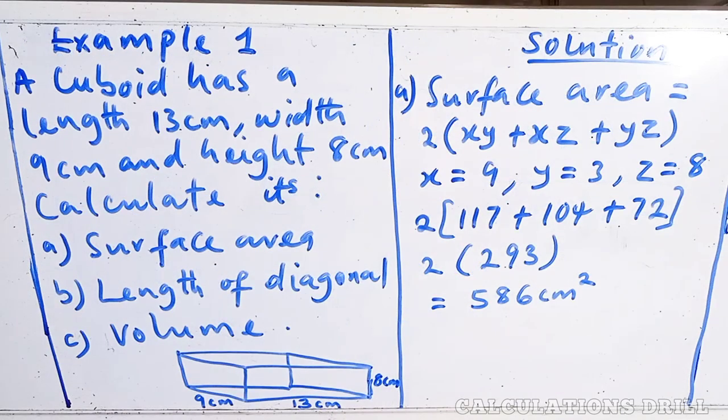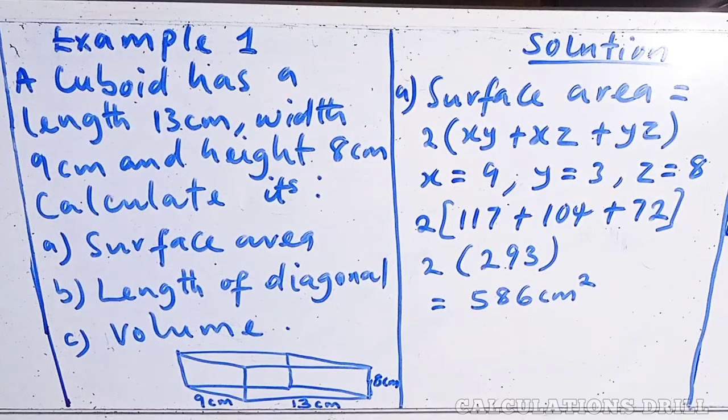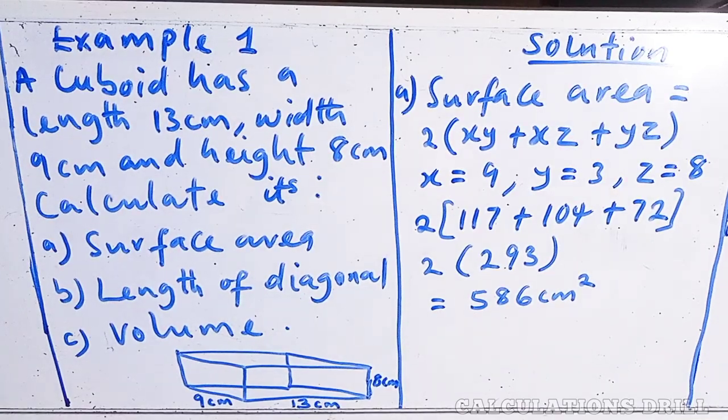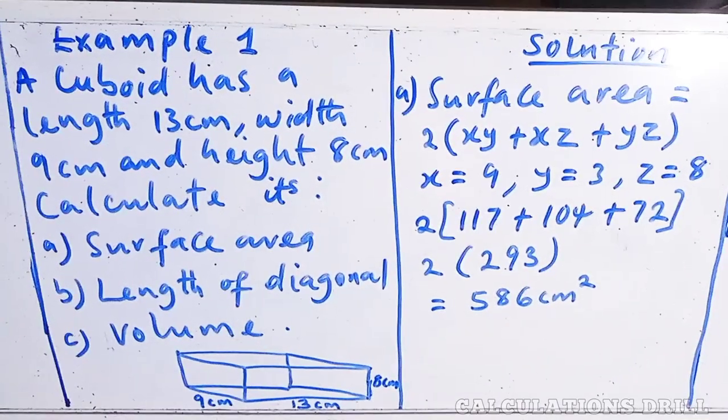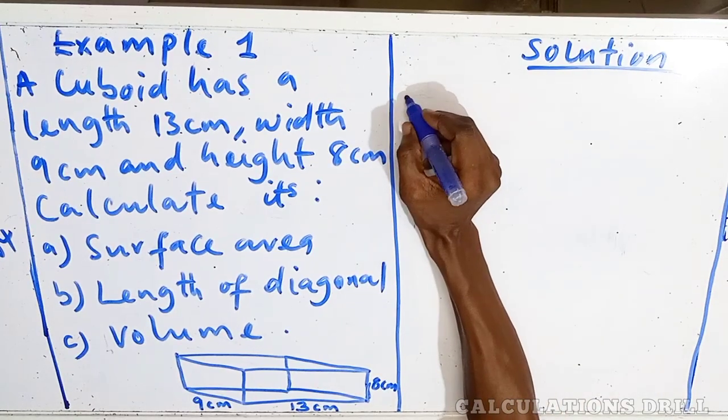A cuboid has a length 13 cm, width 9 cm, and height 8 cm. Calculate its surface area, length of diagonal, and volume. The first one, surface area.